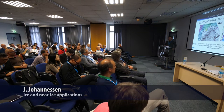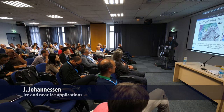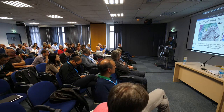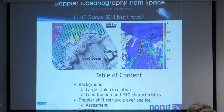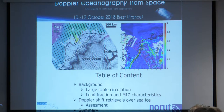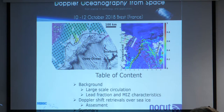We are now going to move north into sea ice-infested waters, and of course it's a bunch of Norwegians who are going to take you up there. We are from the Nansen Center and from Norut in Tromsø. The content of my presentation will first be some background on sea ice-covered areas, both regarding circulation and sea ice characteristics, then some examples from the Doppler shift retrievals over sea ice, and finally a summary.